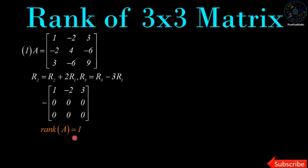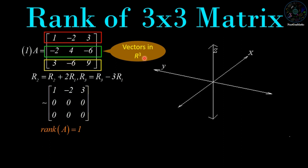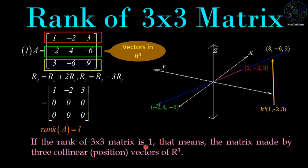Now we understand the geometric meaning of rank 1. We consider every row as a vector of R3 and plot them in space R3. The first vector is [1, -2, 3], the second is [-2, 4, -6], and the third is [3, -6, 9]. We can see that all three lie on the same line, which is a multiple of [1, -2, 3]. So we conclude that if the rank of a 3×3 matrix is 1, the matrix is made by three collinear position vectors of R3.